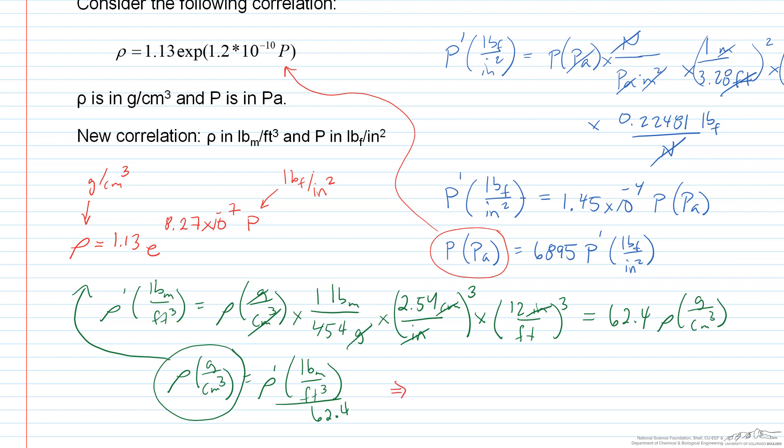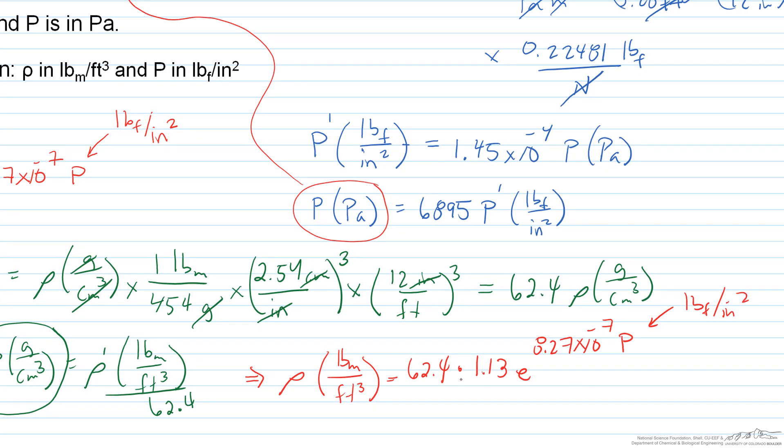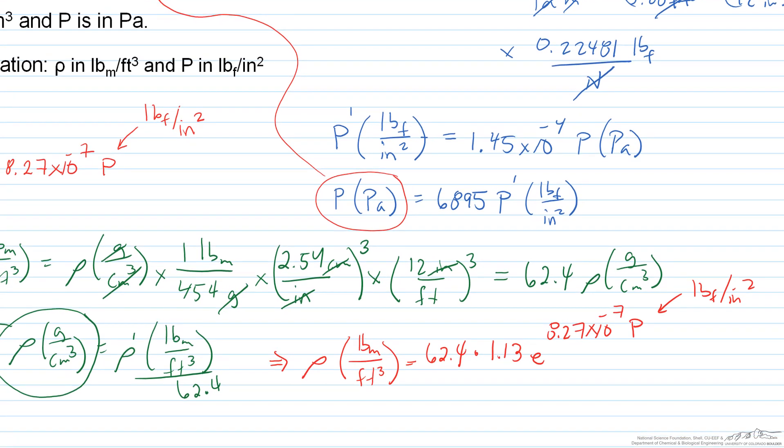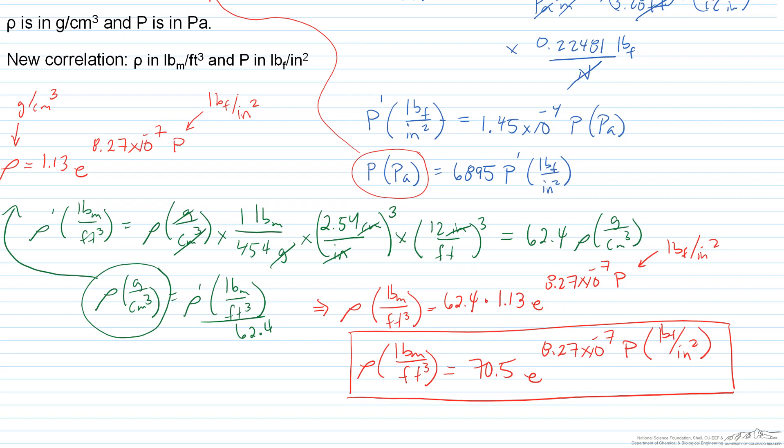So what that's going to give me is rho in pound mass per cubic feet is equal to 62.4 times 1.13e to the 8.27 times 10 to the negative 7th times our pressure. And remember, pressure here is psi, so pound force per square inch. And when we do that, when we multiply the 62.4, we end up with our density in pound mass per cubic feet is equal to 70.5e to the 8.27 times 10 to the negative 7th times pressure. And this pressure is in pound force per square inch. So this is what we're trying to find. So that is how we find the density, pound mass per cubic foot, in terms of pressure in pound force per square inch. Thanks for watching.